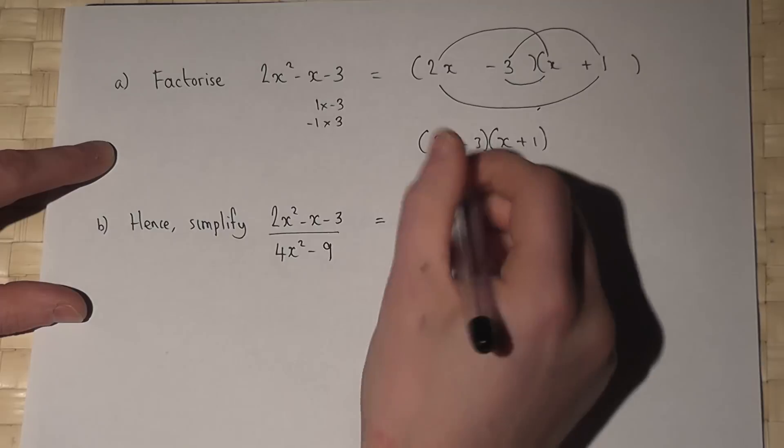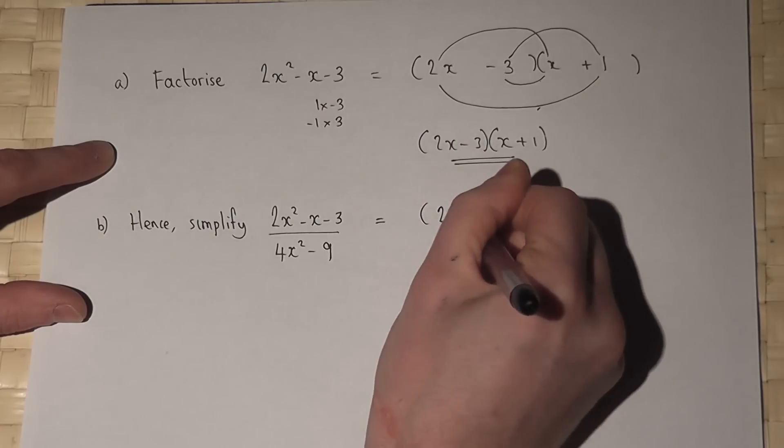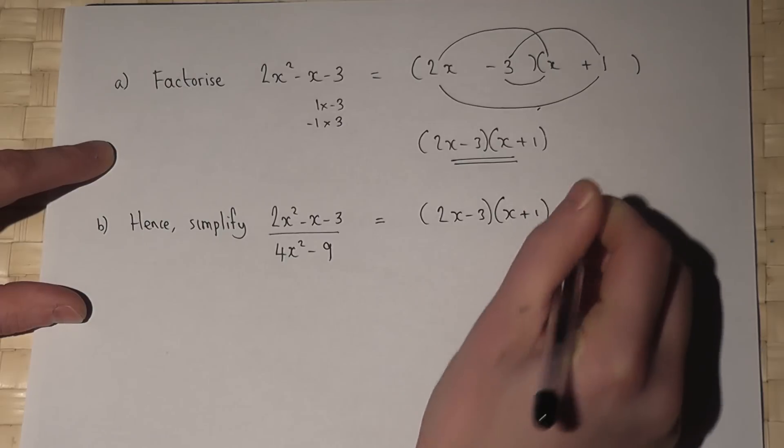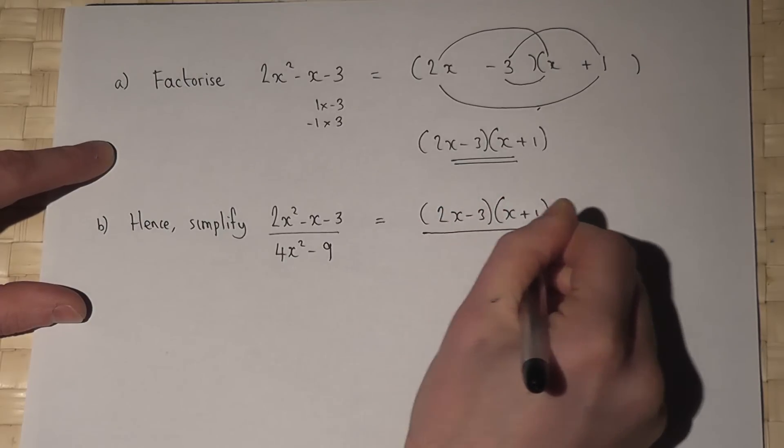Now the top of this fraction, as we know, is 2x minus 3 and x plus 1. However, the bottom is what's called the difference of 2 squares.